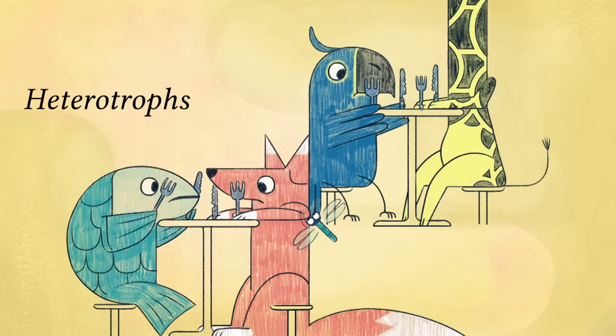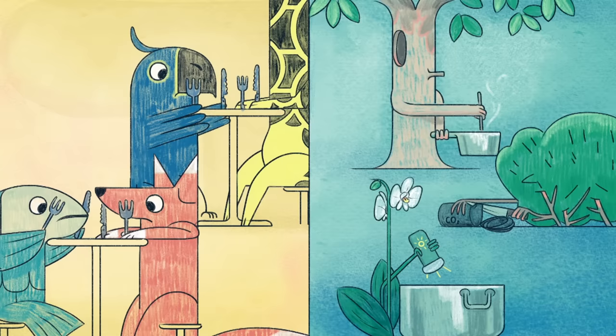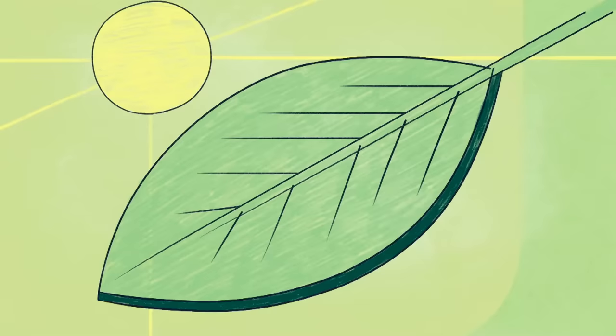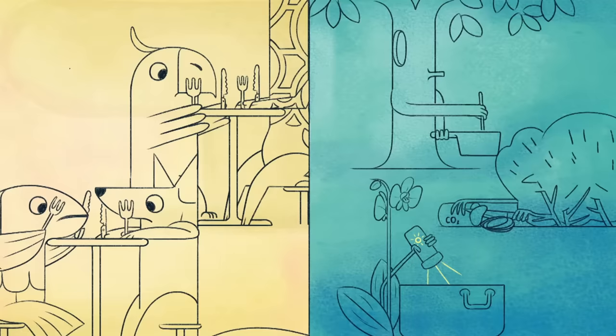Generally speaking, animals are what are called heterotrophs, meaning they can't produce their own food. They're consumers of other life. Plants, meanwhile, are autotrophs, or producers. They can synthesize their own fuel from sunlight, CO2, and other inorganic compounds. Plants do this by using organelles called chloroplasts, which give them their bright colors and convert sunlight into food through photosynthesis.